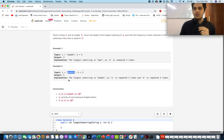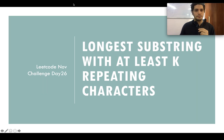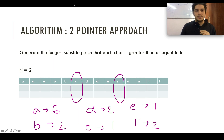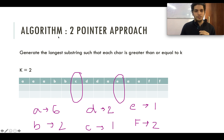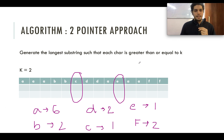Without much ado, let's quickly look at the algorithm. The longest substring with K repeating characters can be solved using a simple two-pointer approach. Let's take a bigger example than what's specified in the question: the string is 'aaabbcddaeddff'. Let me take a pointer here and talk about how we're going to approach this.